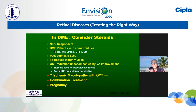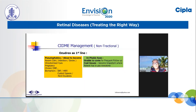Situations for early switch to Ozurdex include: people who do not respond to two or three injections, co-existent comorbidities like recent MI or stroke, pseudophakic eye (very low threshold), and in the COVID era where we do not want patients coming frequently. Ozurdex may be a preferred drug. Biomarkers indicating inflammatory phenomena — like a lot of hyperreflective dots, hard exudates, and subretinal fluid — are also indications. In such situations my threshold is very, very low, and I shift to Ozurdex very fast.